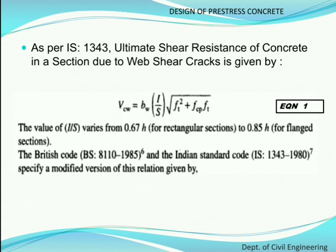As per IS 1343, the ultimate shear resistance of concrete due to web shear cracks is given by: Vcw = bw × (I/S) × √(ft² + fcp × ft). This is Equation 1a, the basic equation employed for obtaining the ultimate shear resistance due to web shear.